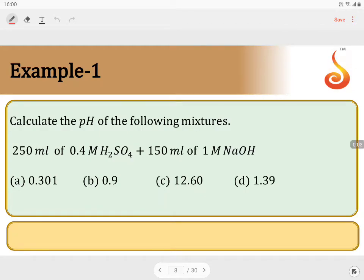Calculate the pH of the following mixtures: 250 ml of 0.4 molar H2SO4 plus 150 ml of 1 molar NaOH.